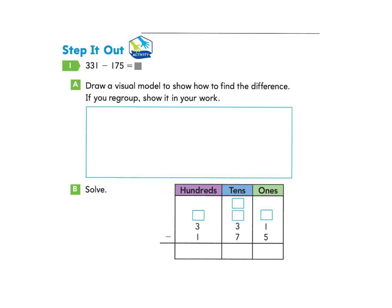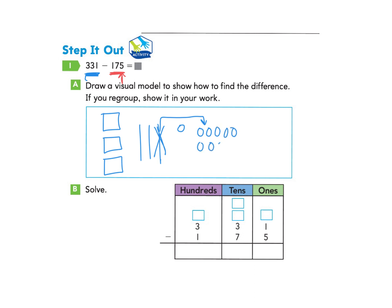You may want to pause and try this part on your own, or you can follow along with me. First, I take the number 331 and draw it out — 3 hundreds, 3 tens, and 1 one. Now I'm going to subtract 175, and we always start with the ones column. I don't have enough ones to subtract 5, so I need to regroup. I take one of my tens, cross it out, and regroup to show 10 ones. Now I have 11 ones total, and I take away 5, crossing out 5.